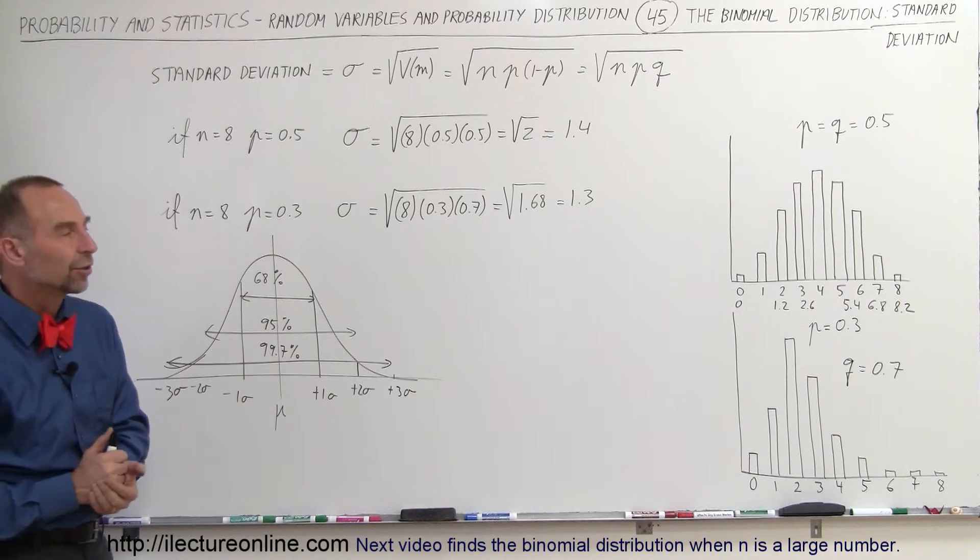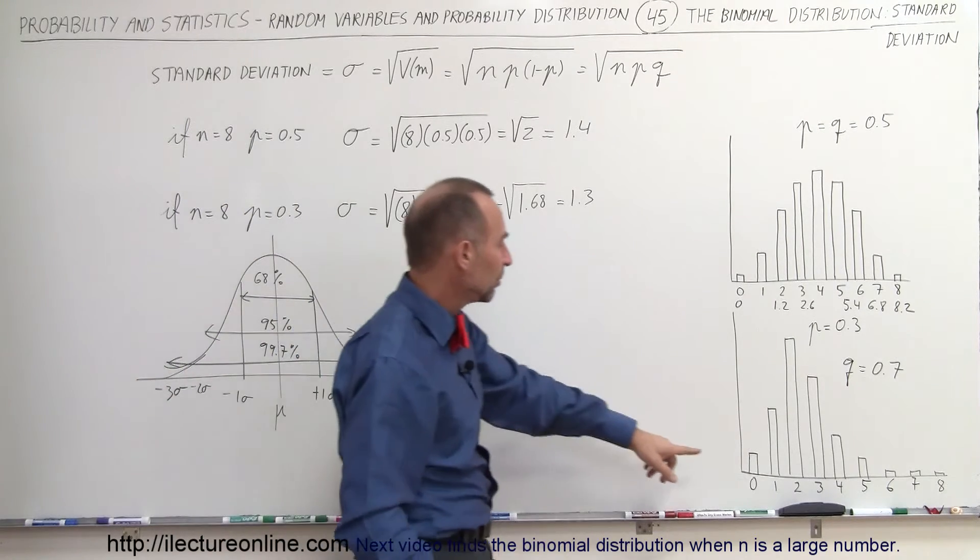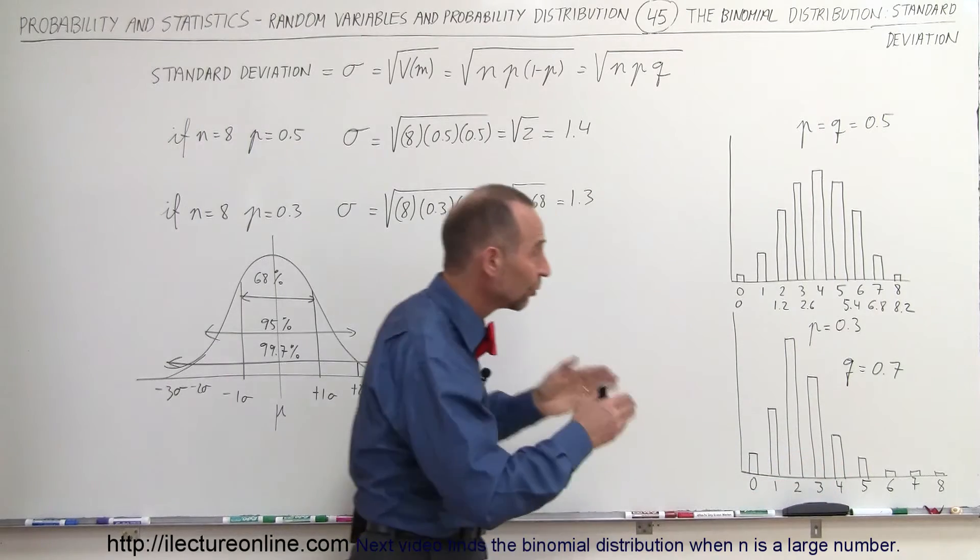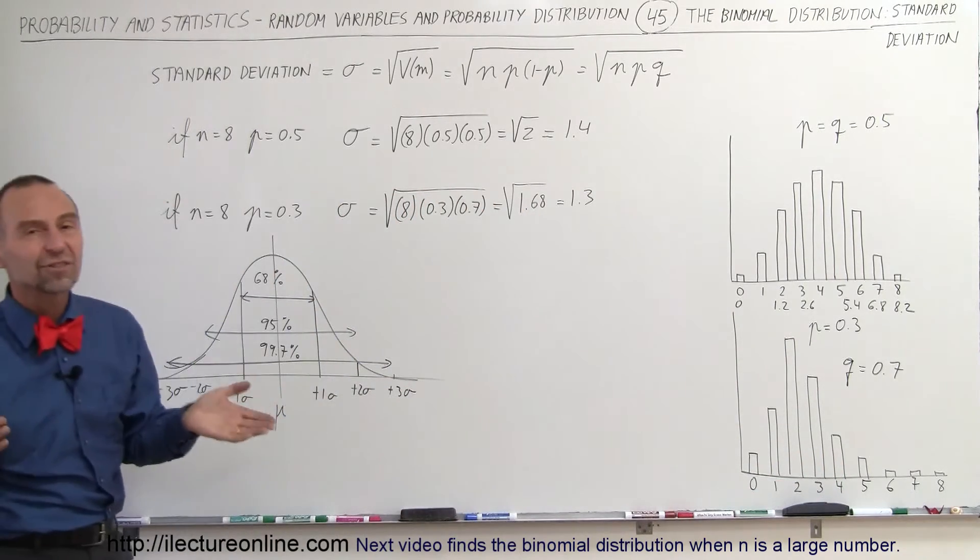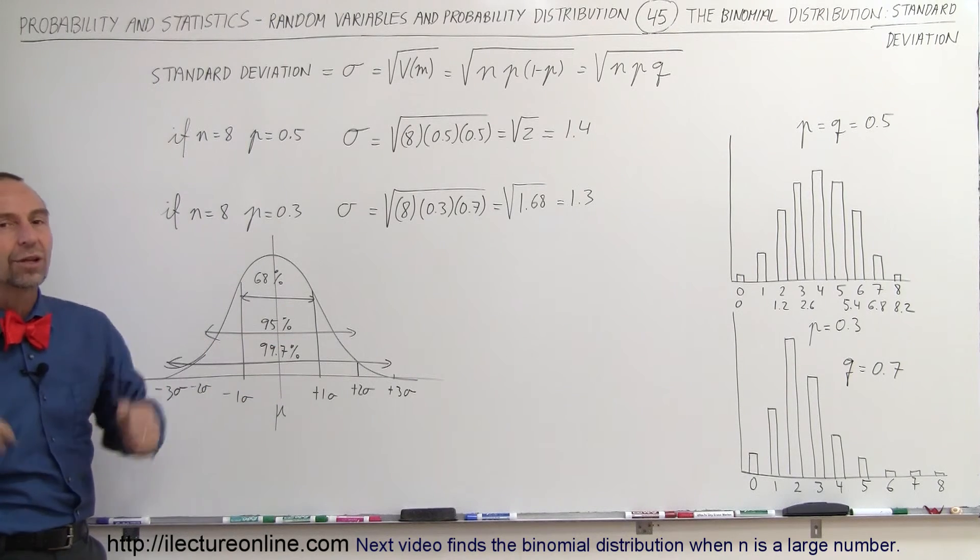So trying that over here, of course, with the 1.3 it would be 2.4, plus or minus 1.3, plus or minus 2.6, and plus or minus 3.9 for one, two, and three sigma. And you have kind of a similar situation where when you go out three sigma you have pretty well close to 100% of your values incorporated in that range.